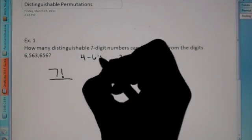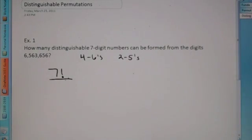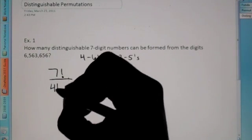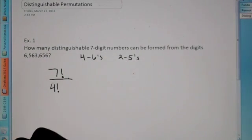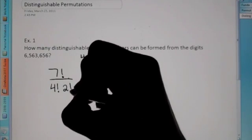Four sixes and two fives. So what we're going to do is, if there's ever repeated value when we're looking for distinguishable permutations, we're going to divide by that number factorial. So there's four sixes, so we're going to divide by four factorial. And here, there's two different fives, so we're going to divide by two factorial.